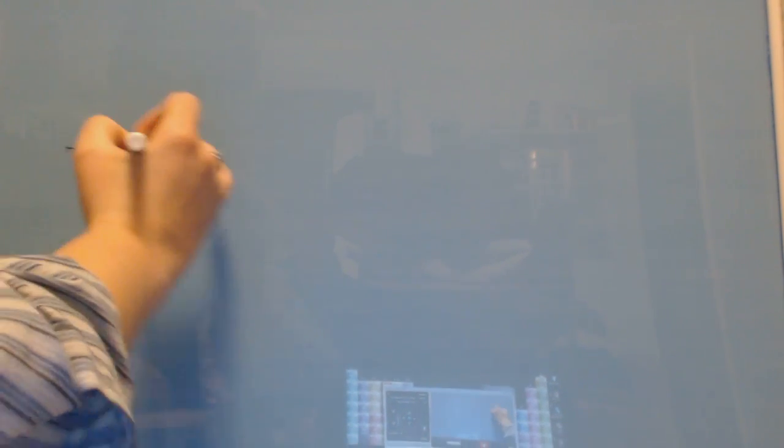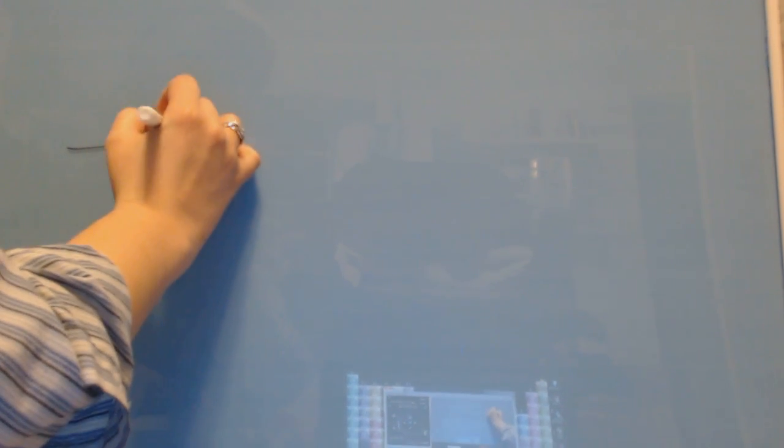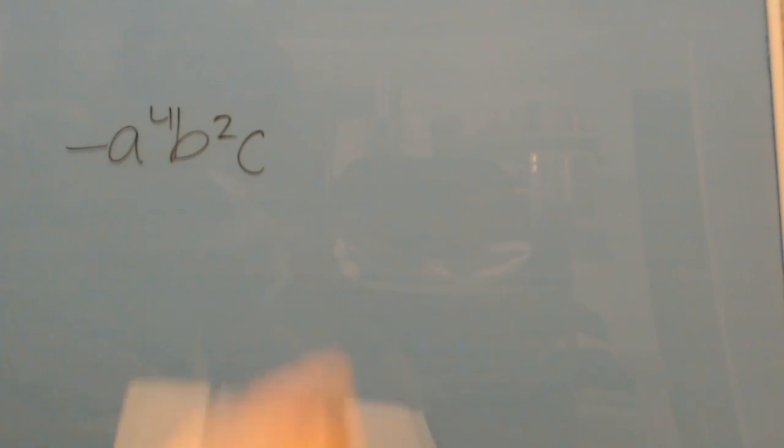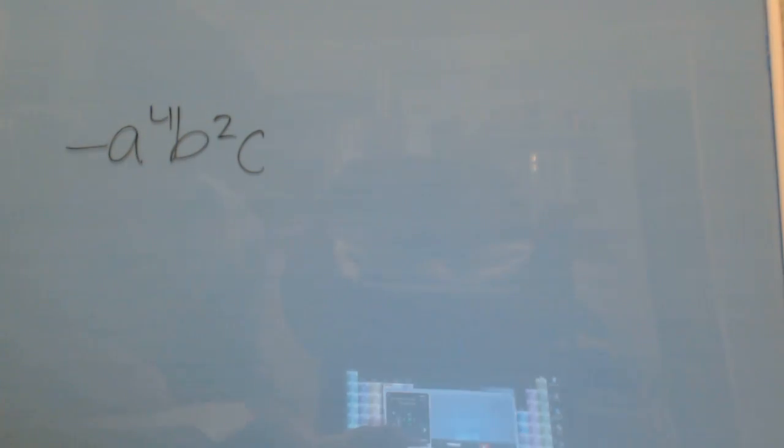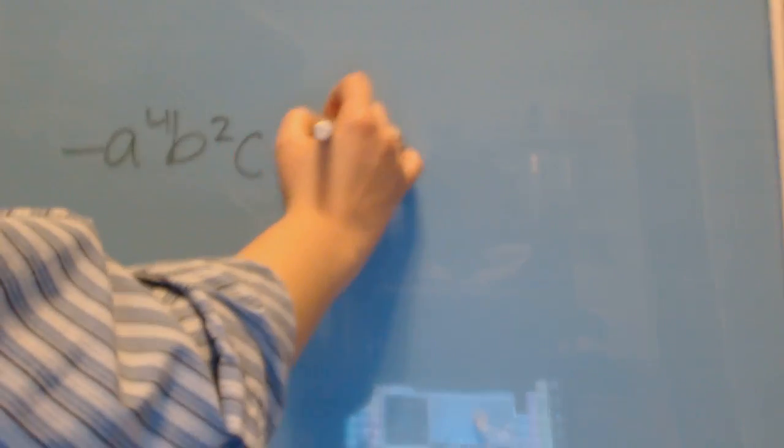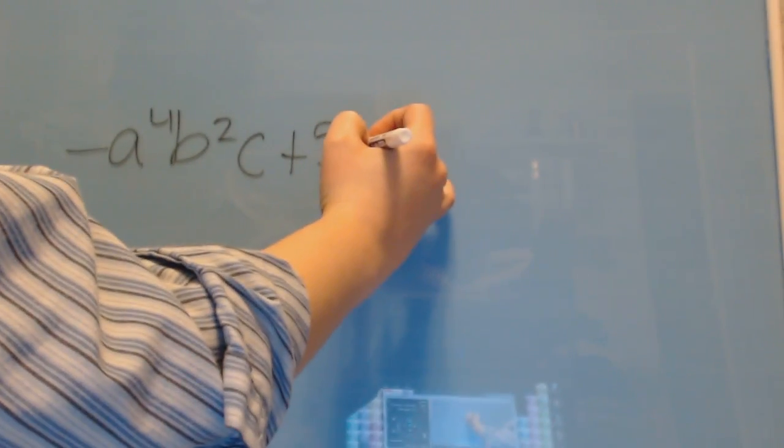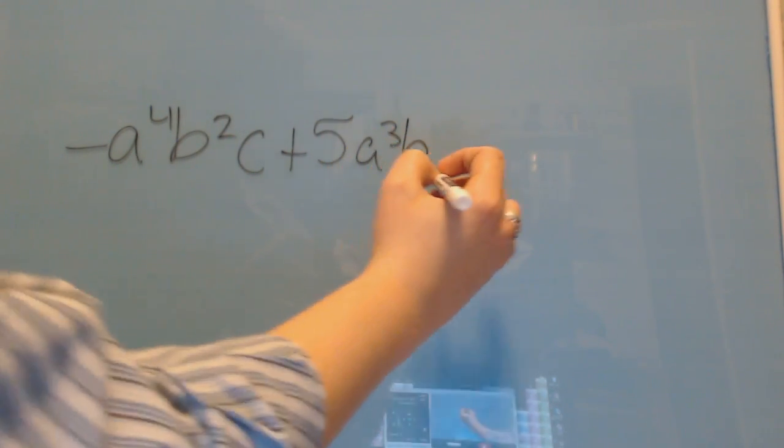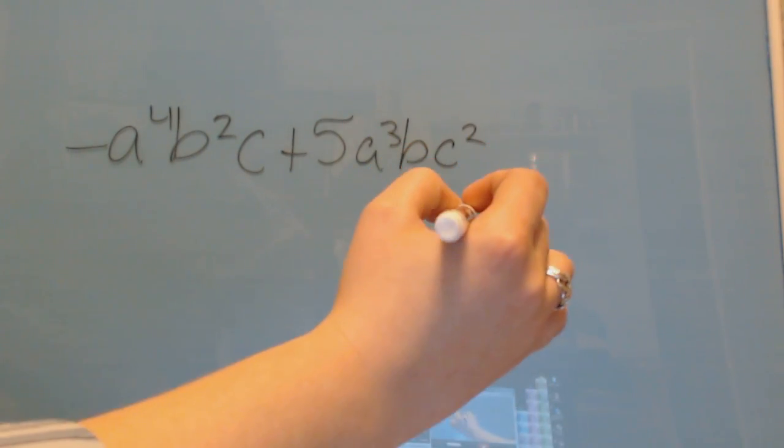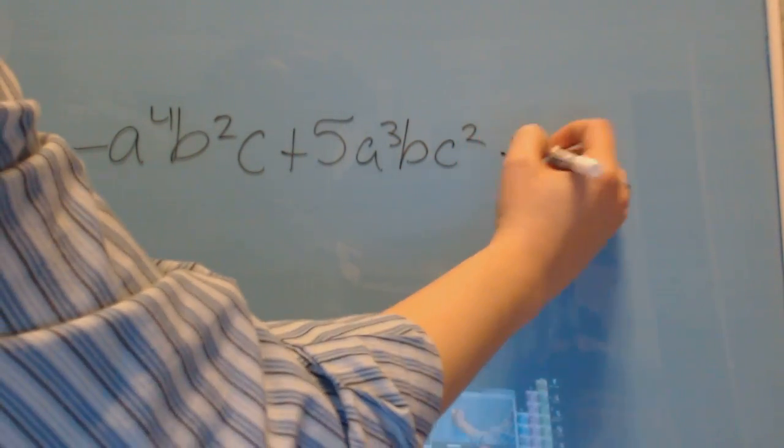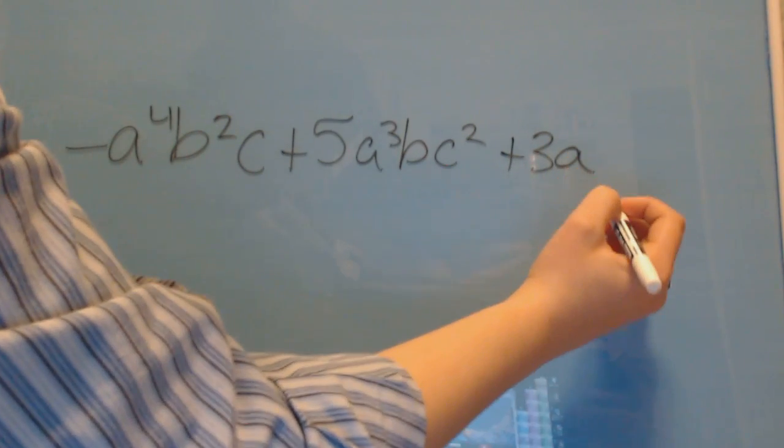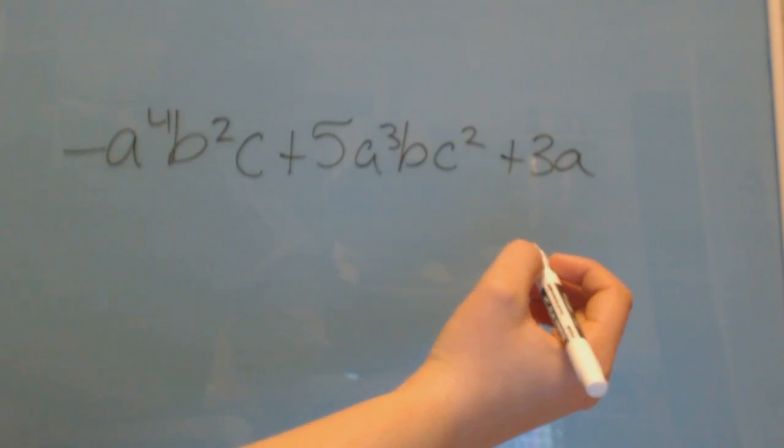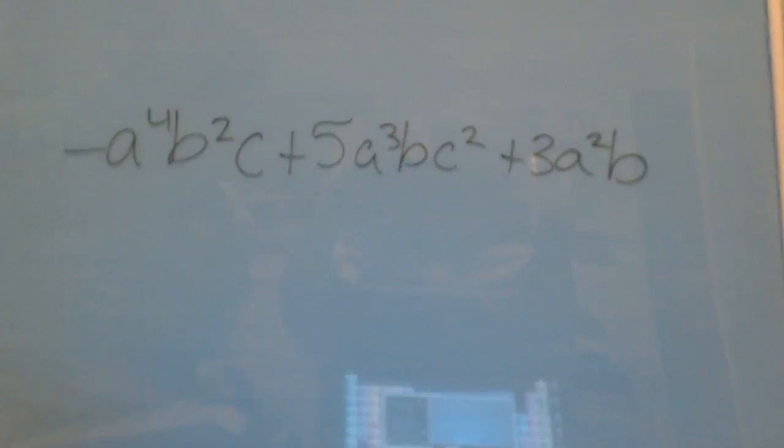It is a negative a to the 4th, b to the 2nd, c to the 1st. And then we've got plus 5a to the 3rd, b, and then c to the 2nd. Plus 3a squared b. Alright.